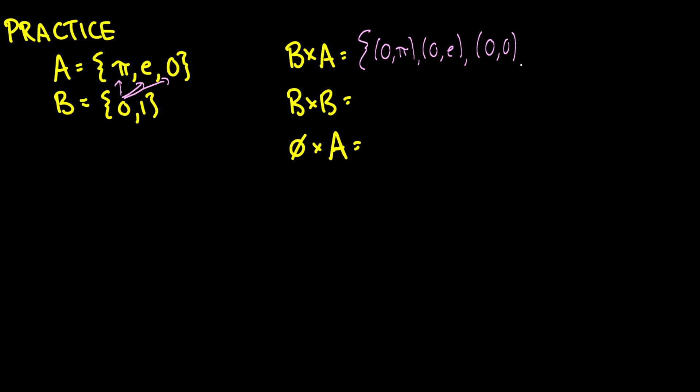And now we're going to do the same thing except with 1. So we're going to have (1,π), (1,e), and (1,0). And that would be the cross product of B cross A.